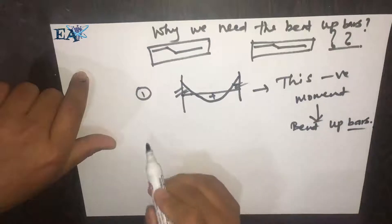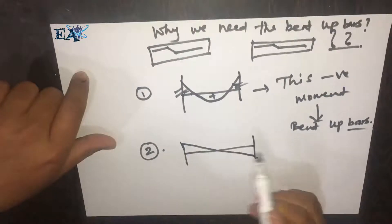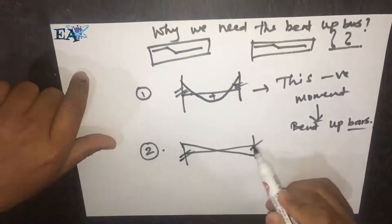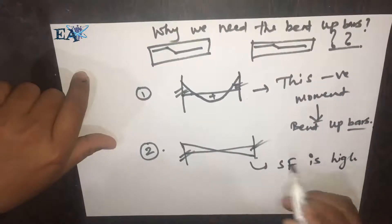The second reason is that if we see the shear force diagram, we'll see something like this - the shear force diagram of a beam. You see that at the supports, these two supports, the shear force is high at the support.